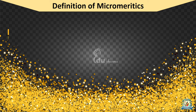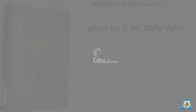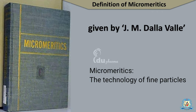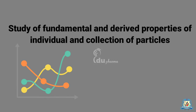The term Micromeretics can be defined as the science and technology of small particles. The term was created by J.M. De La Valle in his book entitled Micromeretics: The Technology of Fine Particles. It was derived from the Greek words for small and apart. It is thus the study of fundamental and derived properties of individual as well as collection of particles.